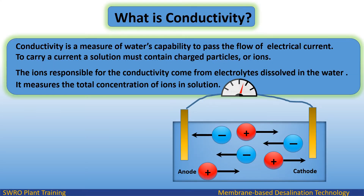What is conductivity? Conductivity is a measure of water's capability to pass the flow of electrical current. To carry a current, a solution must contain charged particles or ions. The ions responsible for conductivity come from electrolytes dissolved in the water, and it measures the total concentration of ions in solution.